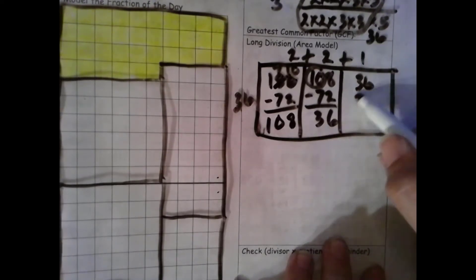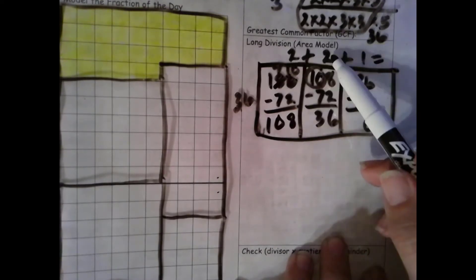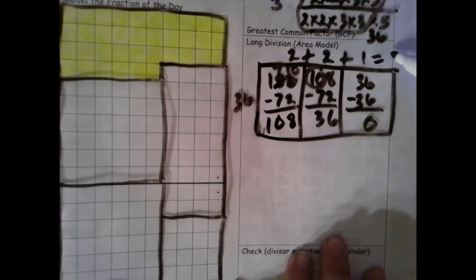Bring that up. And then 1 times 36 is 36. Number is the same. Zero is the game. Add up these partial quotients. 2 plus 2 is 4. Plus 1 is 5.